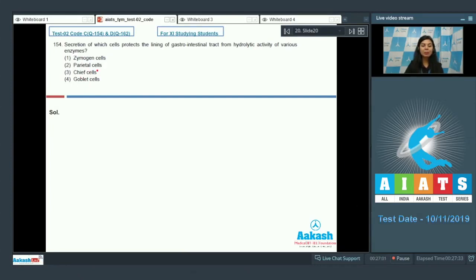Zymogen cells secrete pepsinogen, which is needed for the digestion of proteins. Parietal cells secrete HCl and intrinsic factor needed for vitamin B12 absorption. The right answer here would be option number 4, goblet cells.